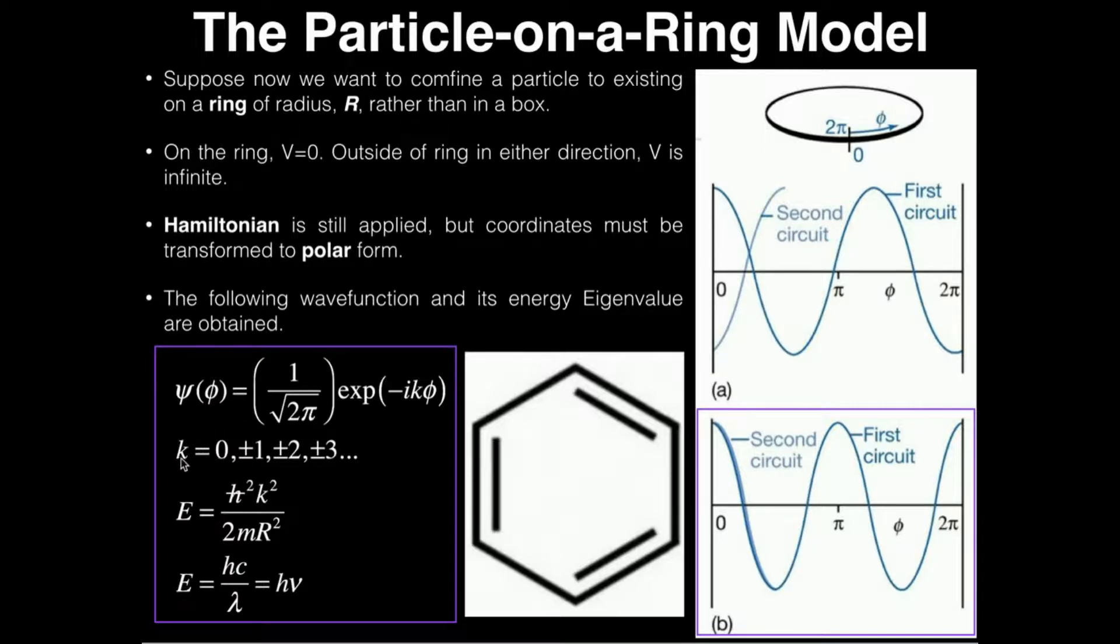We have this k, which you see here in the exponential argument, in this negative ik phi. k is the magnetic quantum number. Remember from general chemistry when we had four quantum numbers: the principal quantum number, the azimuthal quantum number usually l, the magnetic quantum number usually denoted with an m, and the spin quantum number. This k is the magnetic quantum number. It can have values zero, plus or minus one, plus or minus two, plus or minus three, and so on. So what exactly is the magnetic number here, or the k?